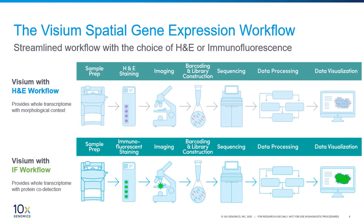The Visium workflow is relatively straightforward as shown in this slide. The only difference between the two workflows is the method of staining: the top workflow stains tissue samples with H&E, whereas the bottom uses immunofluorescent antibody markers. To start, prepare your fresh frozen OCT-embedded tissue sections with the cryostat and mount them onto the Visium slide. Then stain these samples using either the H&E or IF protocol and capture images of your samples. Next, perform barcoding and library construction and send your libraries for sequencing.